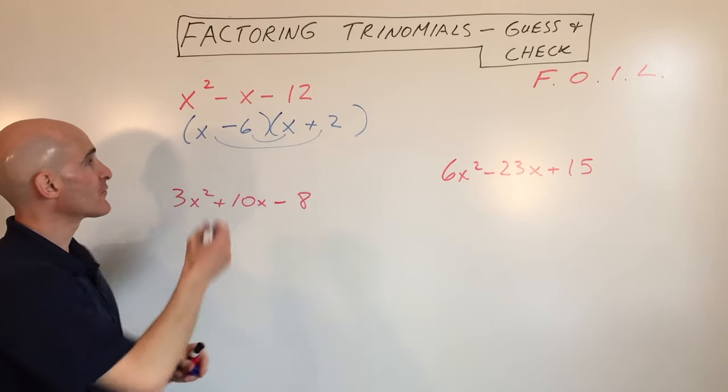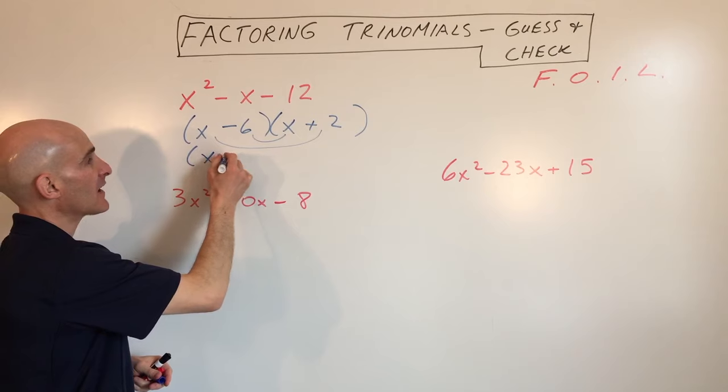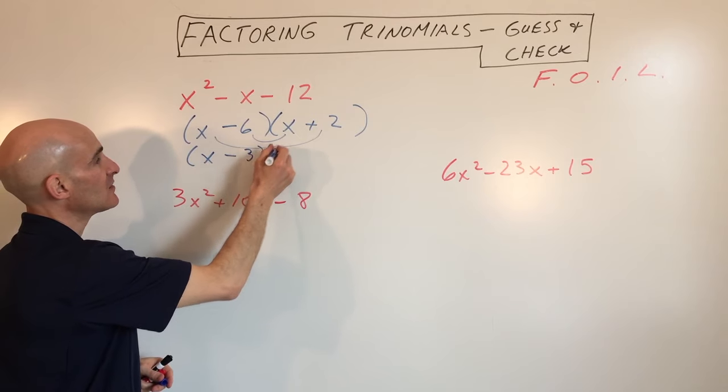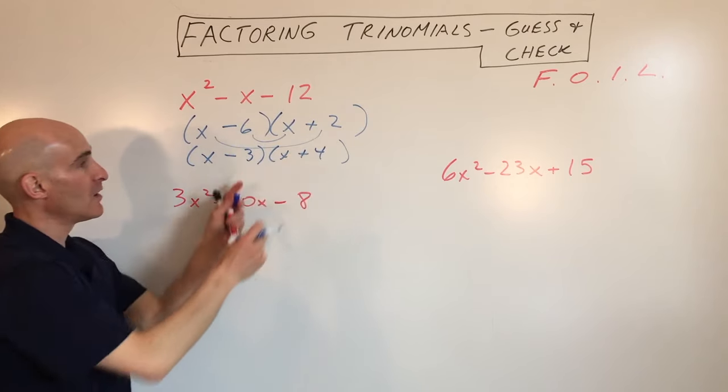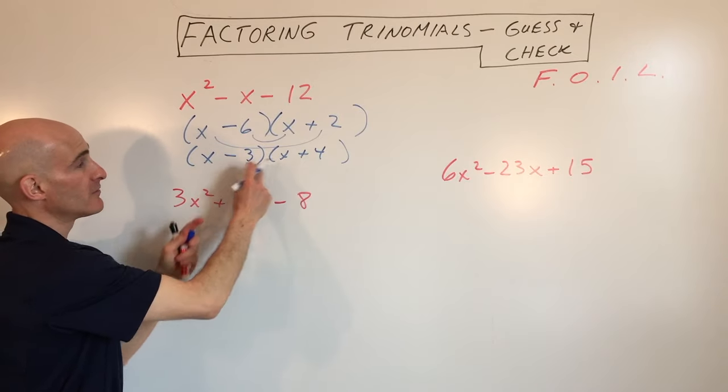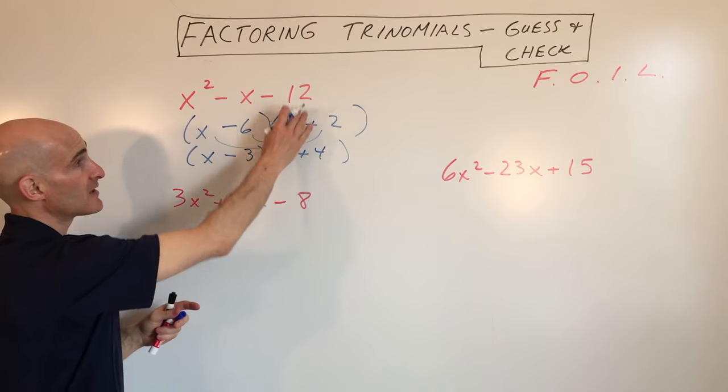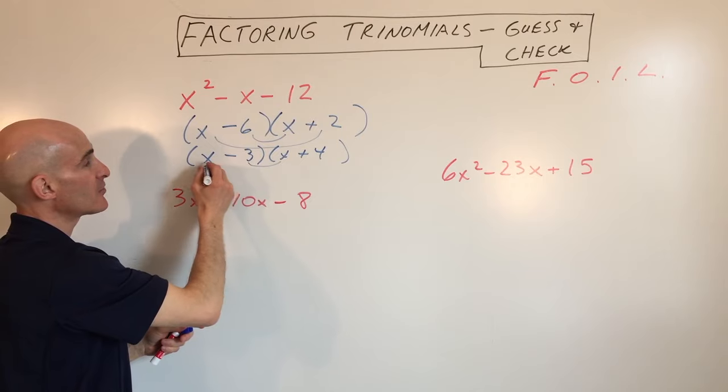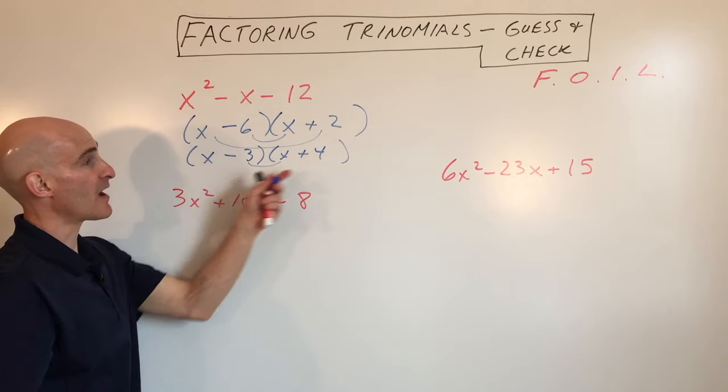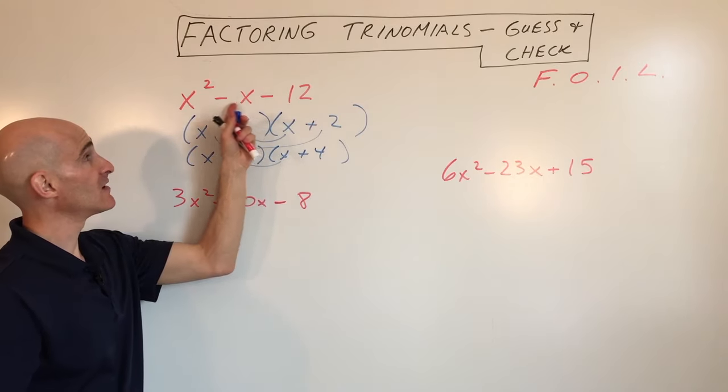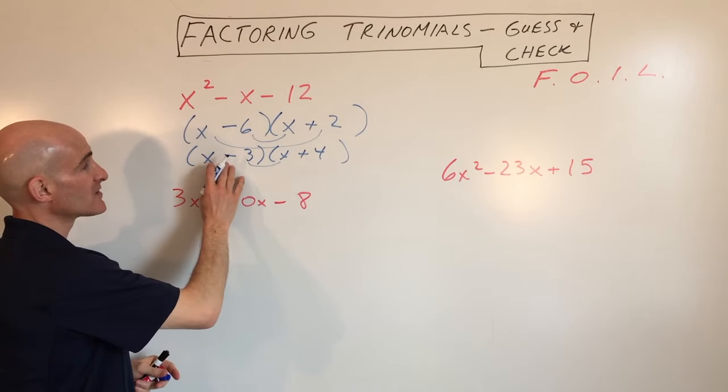So let's try a different combination. How about x minus 3 and x plus 4? That still gives us negative 12, the last term, so we can multiply together. But negative 3x and positive 4x adds up to 1x, but this is negative 1x. So let's see.